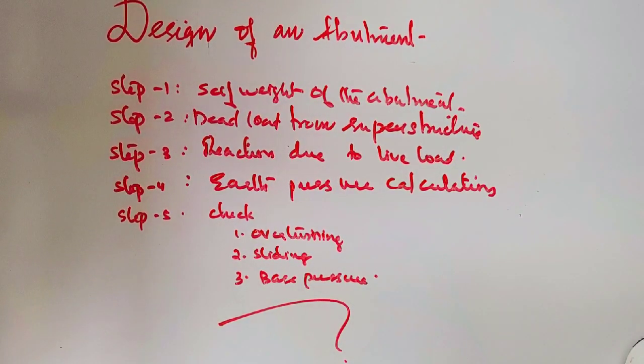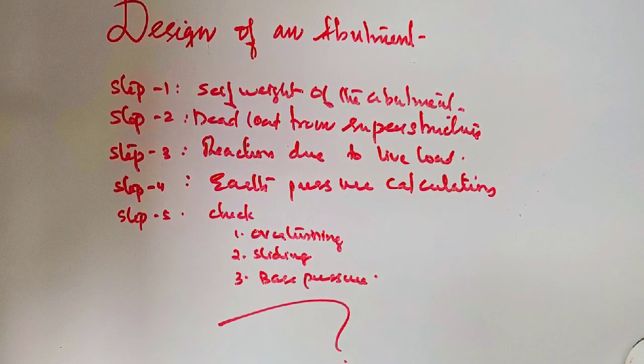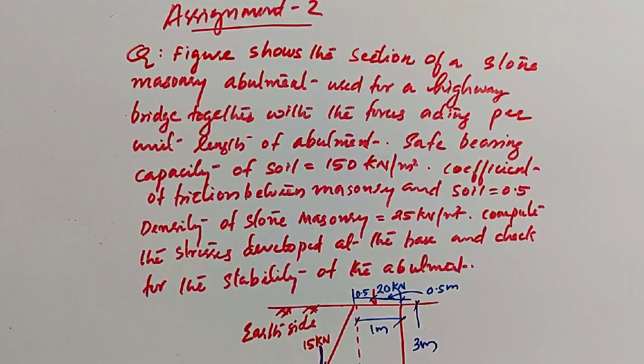In conclusion, design of an abutment: first step is self-weight of the abutment, second is dead load from the superstructure, step 3 is reaction due to live load, step 4 is earth pressure calculation, and in step 5 the stability analysis of an abutment, safe against overturning, sliding, and base pressure.